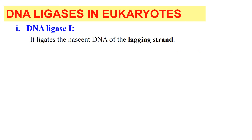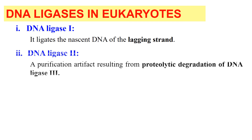Now for examples of DNA ligase in eukaryotes: DNA ligase 1 ligates the Okazaki fragments with each other, meaning it completes the lagging strand by joining Okazaki fragments after the removal of the primer, which is removed by ribonuclease H. DNA ligase 2 is a purification artifact which results from the proteolytic degradation of DNA ligase 3.